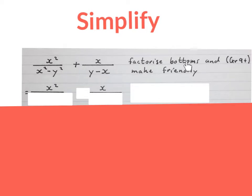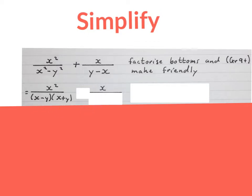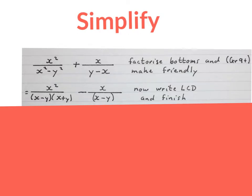Now we have to factorize the denominators or the bottoms and make them friendly so that they can be factorized — you should know how to factorize by now. Then I have to make this denominator friendly; it has to be in the same order. So you change the sign in front of this fraction and flip the x and the y over the minus — this is allowed, you must find out why.